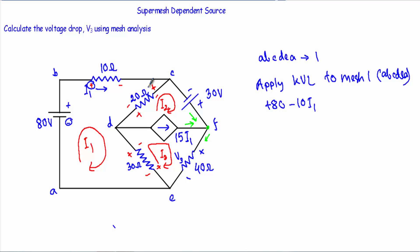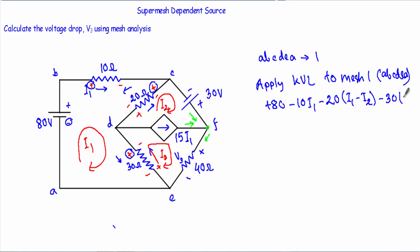After that I encounter this 20 ohm resistor and its positive terminal, so I take its negative sign. I2 will be flowing in this direction and I1 will be flowing in this direction. As I am in loop number 1, I assume I1 is greater than I2, so I take minus 20·(I1 minus I2). After that I encounter this 30 ohm resistor and its positive polarity, so its voltage will be minus 30. I1 enters from this direction and I3 leaves from this direction — as they are in opposite directions I take minus 30·(I1 minus I3).